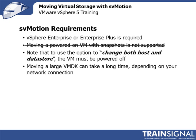Now let's talk about the Storage vMotion requirements. To use SVMotion, you must have either vSphere Enterprise or Enterprise Plus licensing. Previously in vSphere 4.1, moving a powered-on virtual machine with snapshots was not supported — but that's a new feature in vSphere 5. You should also note that to use the option 'Change Both Host and Datastore,' the virtual machine must be powered off. That's really just a manual copy of the virtual machine disk file with deregistration and re-registration on hosts — not a true vMotion or Storage vMotion.